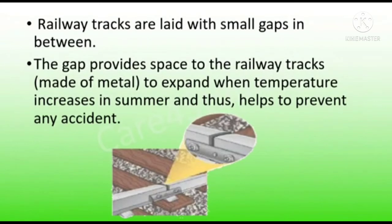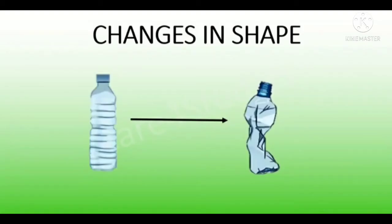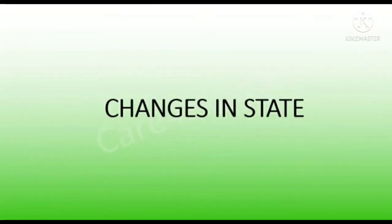Children, you might have seen that railway tracks are laid with small gaps in between. Why? Because the gap provides space for the railway tracks to expand when temperature increases in summer, and thus helps to prevent any accident. Now let's see an example for changes in shape due to heat. You might have seen that when we add hot water to a plastic bottle, the shape of the bottle is changed.